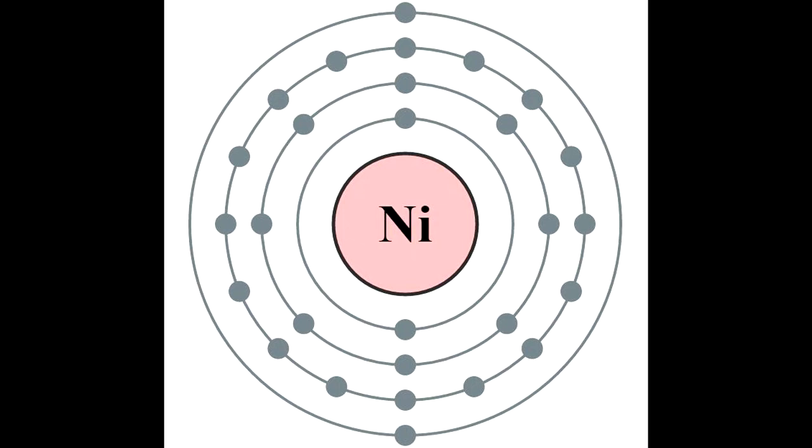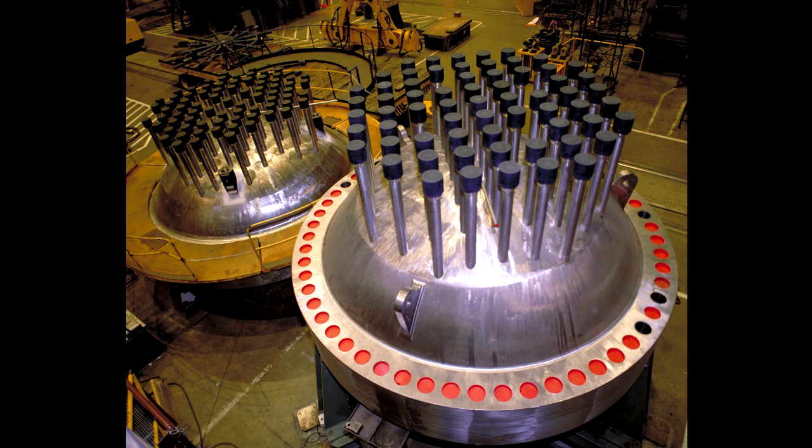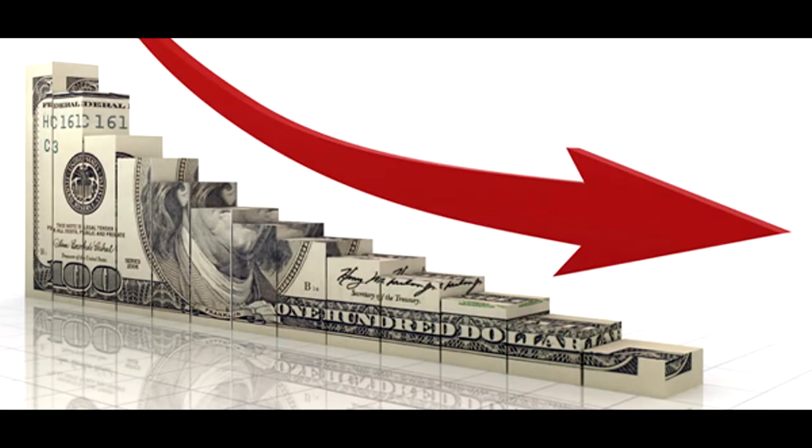Due to the fact that nickel-62 has a relatively small nucleus means that there are extremely large amounts present in nuclear reactor vessels, which leads to large amounts of nickel-63 being produced. This allows for the cost of this isotope to be relatively low.